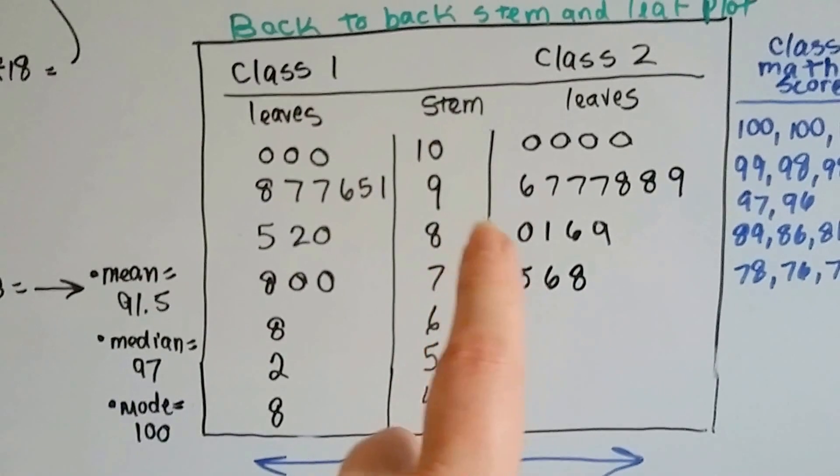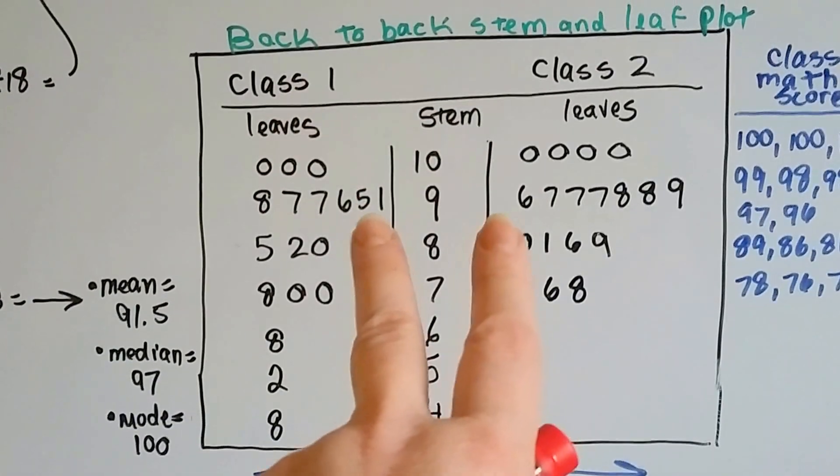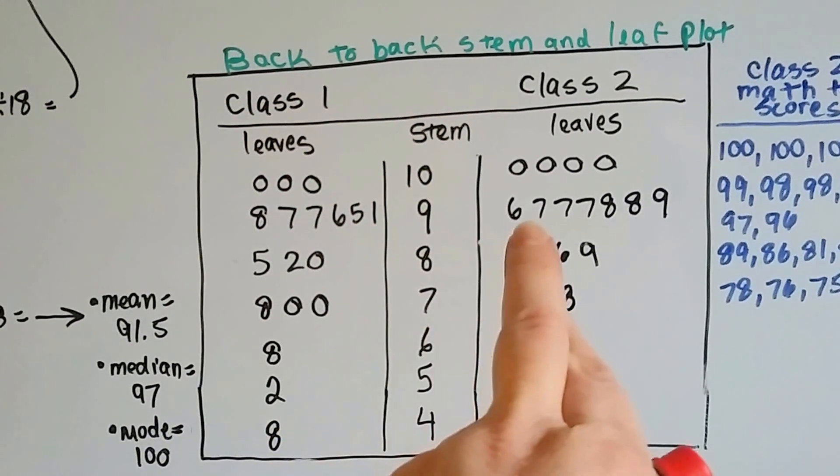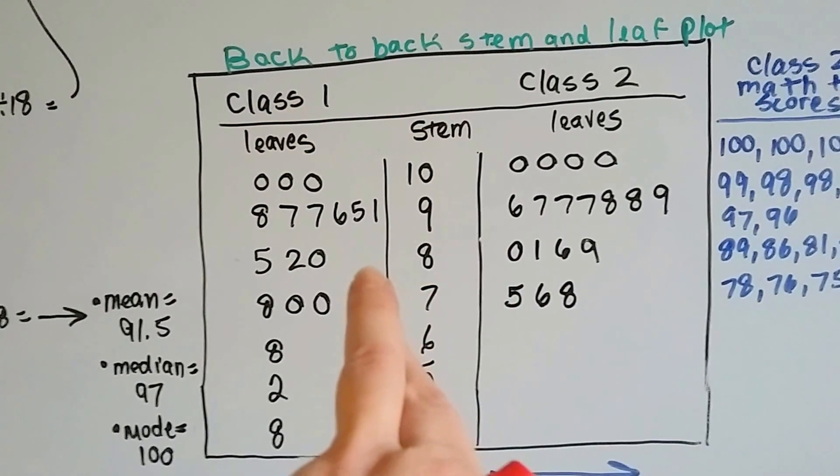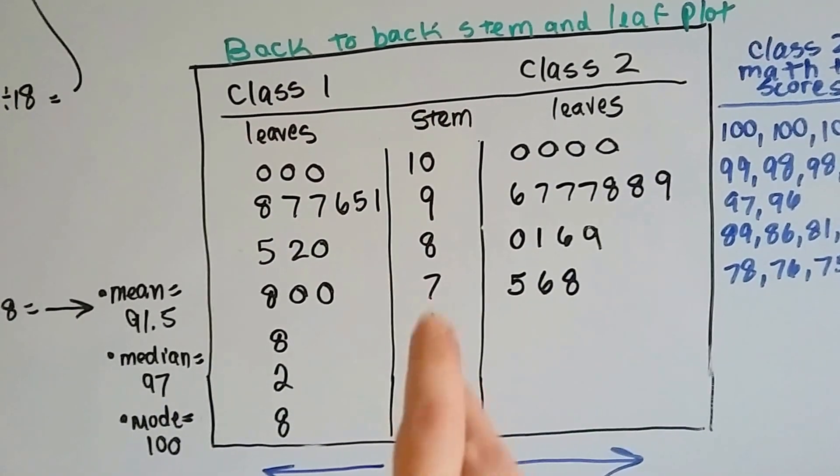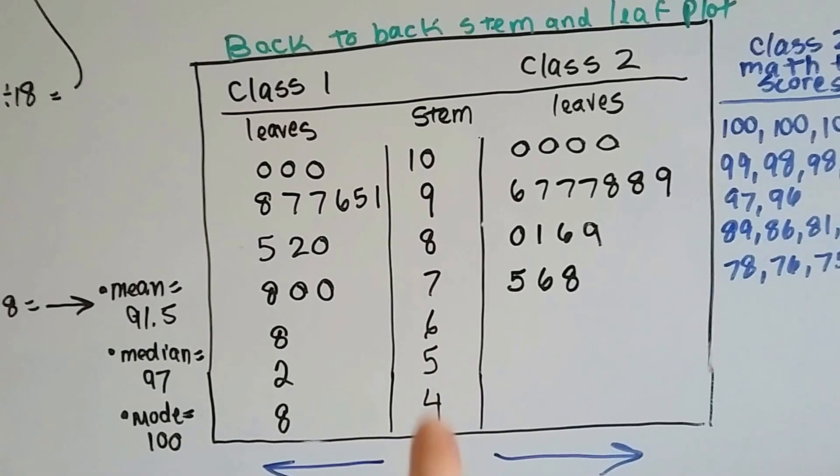Just by looking at this back-to-back stem and leaf plot, you can see they've got ones and fives here, or a 1 and 5. This one doesn't have it at all. And in this one, look, in class two, they didn't have anyone that scored below a 75.